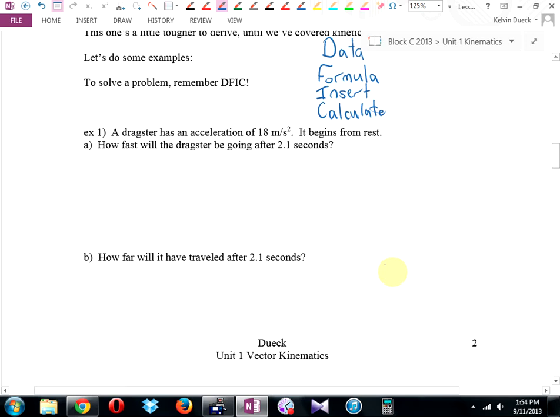Let's do some examples. To solve a problem, I give my kids in Physics 11 a couple of acronyms, and the first one is DFIC, which stands for data, formula, insert, calculate. If I come to a question, and Ryan, I'm not sure what to do, my first thing is I DFIC. I list my data. Example one. A dragster has an acceleration of 18 meters per second squared, begins from rest. How fast will the dragster be going after 2.1 seconds? So in our notes here, we're going to DFIC and be careful and list everything. What are they asking me to find? Final velocity. I write down V final equals question mark.